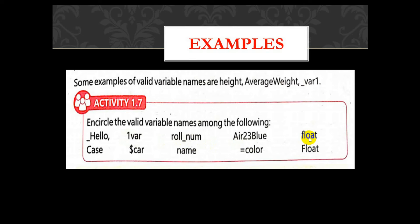'Float' is a reserved word — we can't use it as a variable name. It is a data type in C++, so this is invalid. This name with a dollar sign is invalid because the dollar sign is a special character, and the rules only allow underscore as a special character. This name is valid. This one with 'case equal to' is also reserved, so we can't use it.